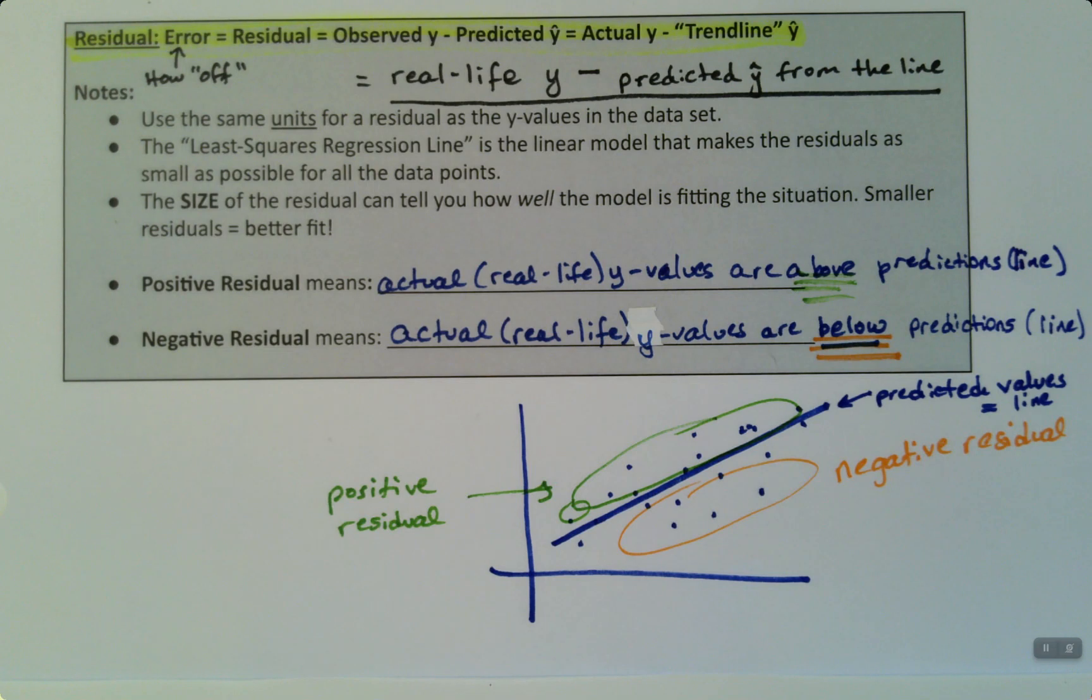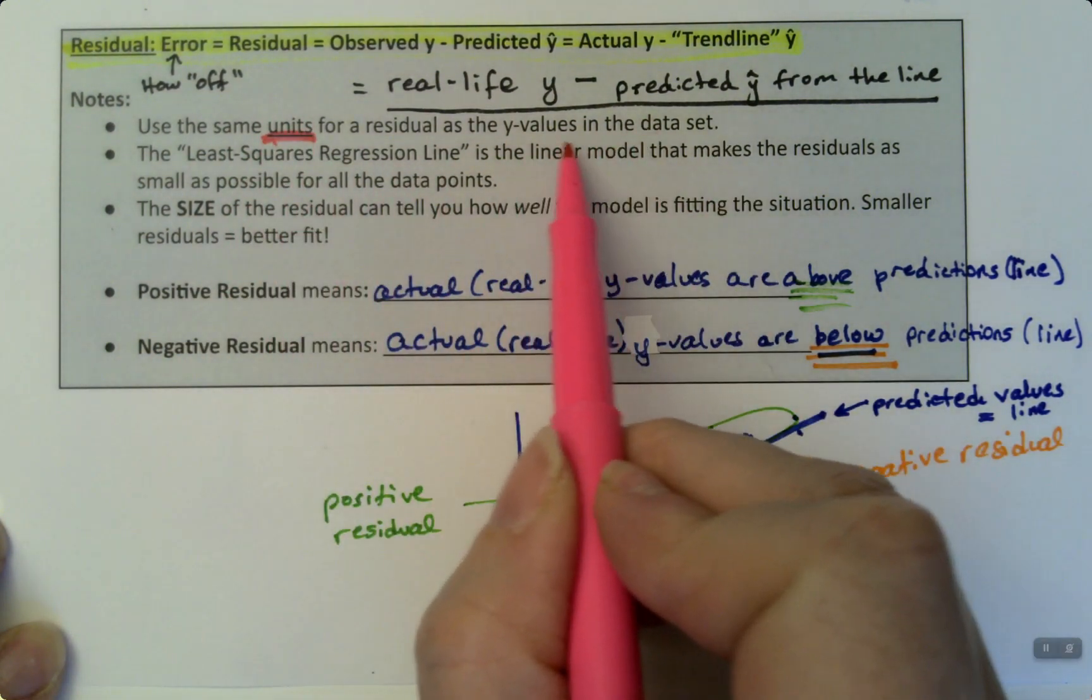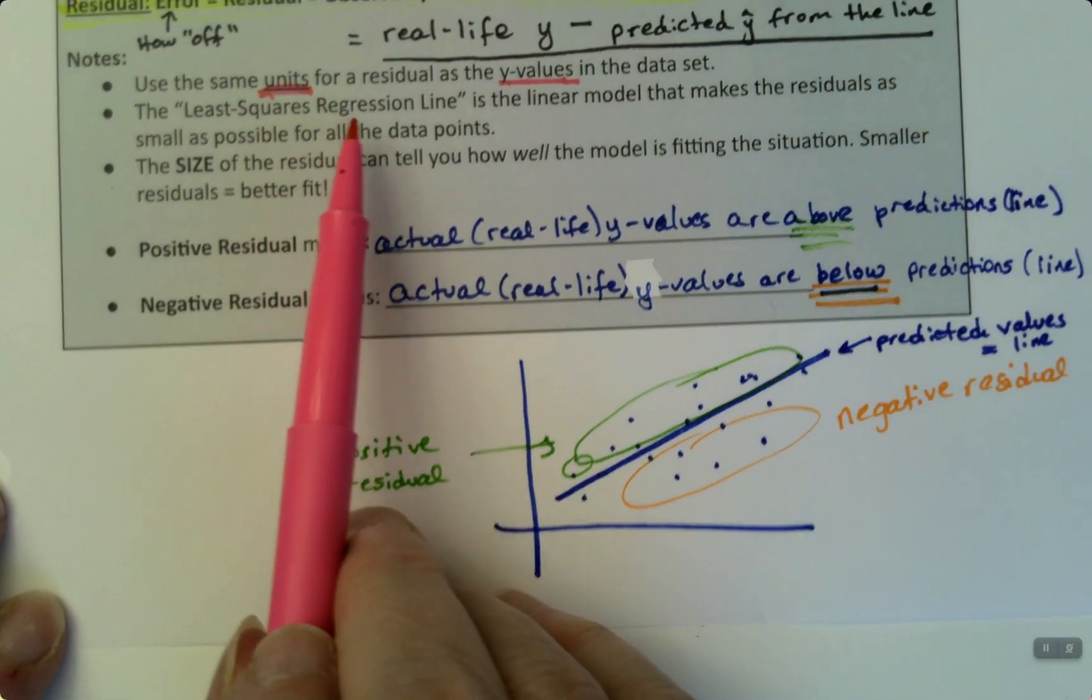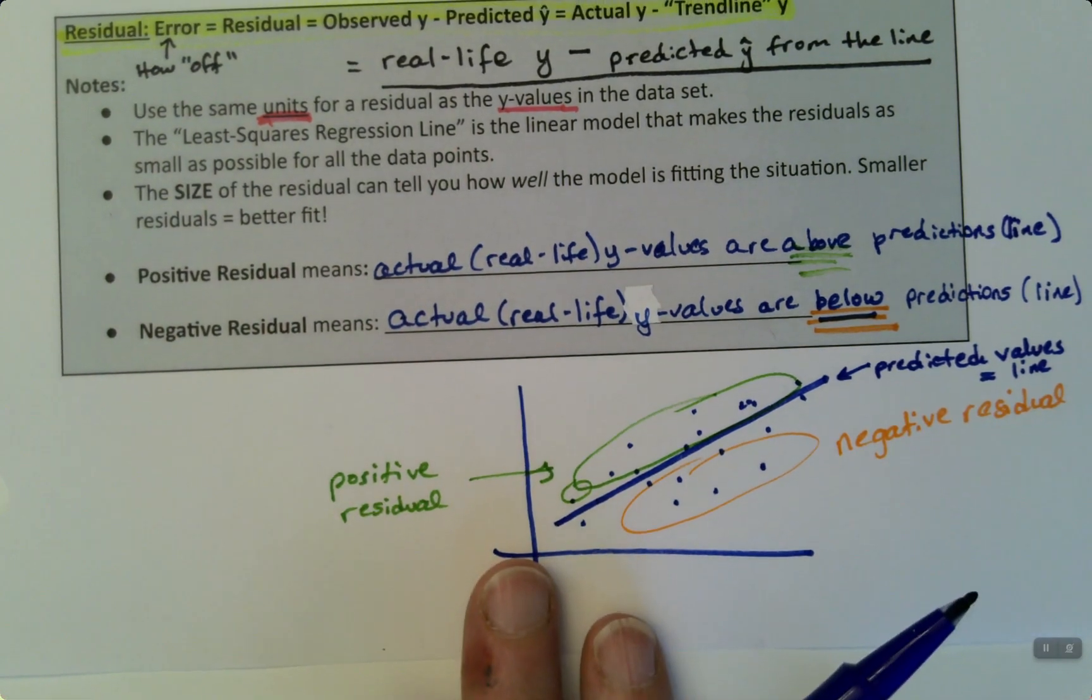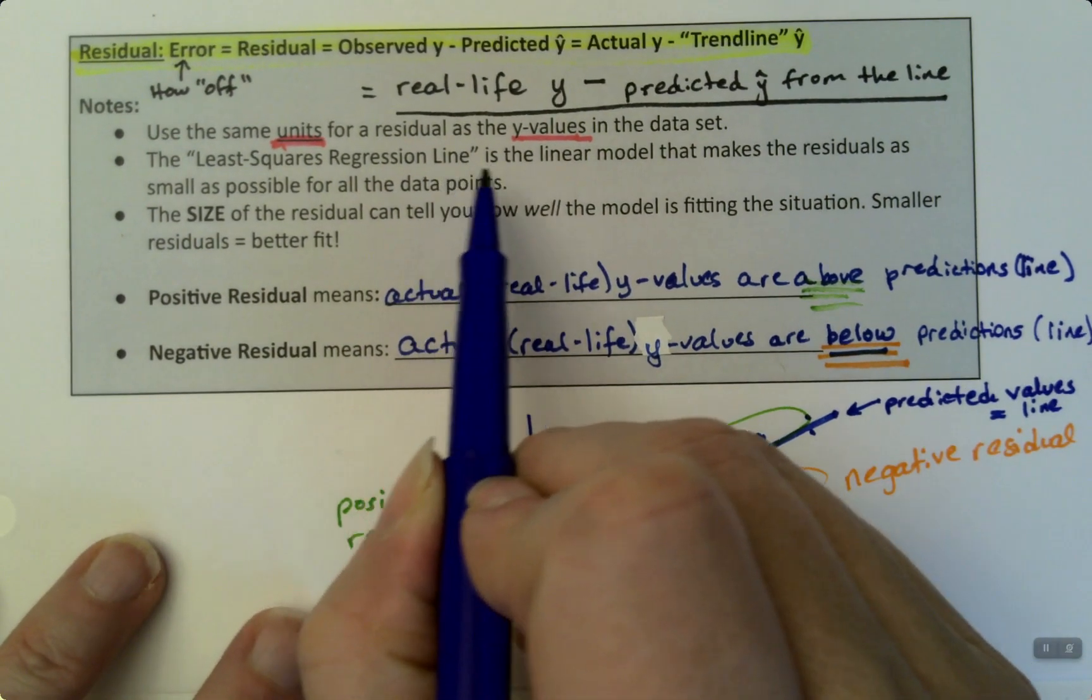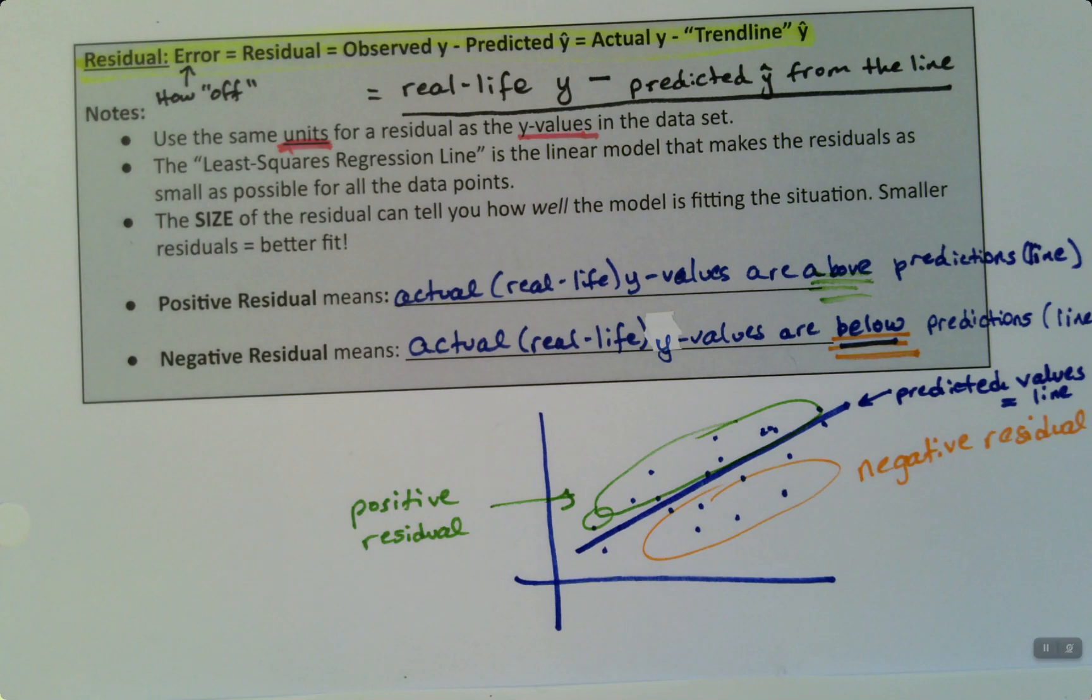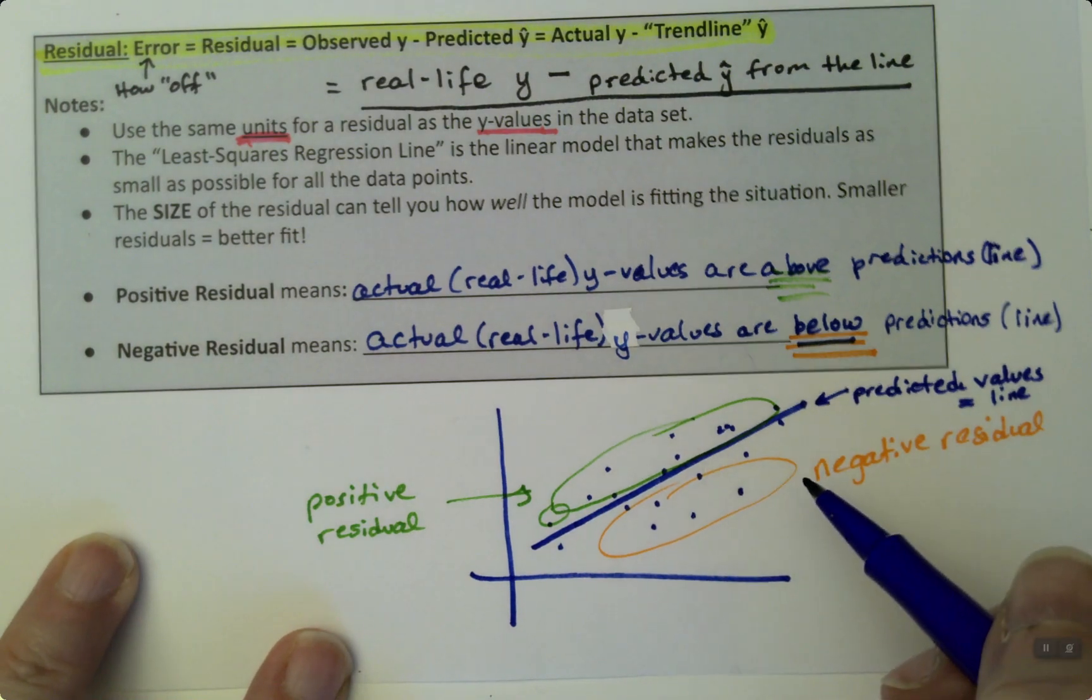Keep in mind, positive and negative is not necessarily good or bad. It is what it is. Actual values being below the line, that the actual, real life y values are above the line. And you're only looking vertically. You're looking at the y values. So the y values are above the line, the predictions, which is the line. A couple other things. It always has the same units as your actual y values. So whatever the units are from the y values, that's your unit. So the y value unit is your unit. Like in our example here, it was years because both the y values are in years.